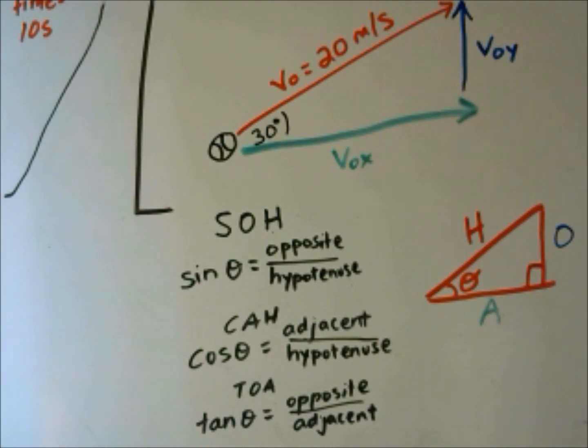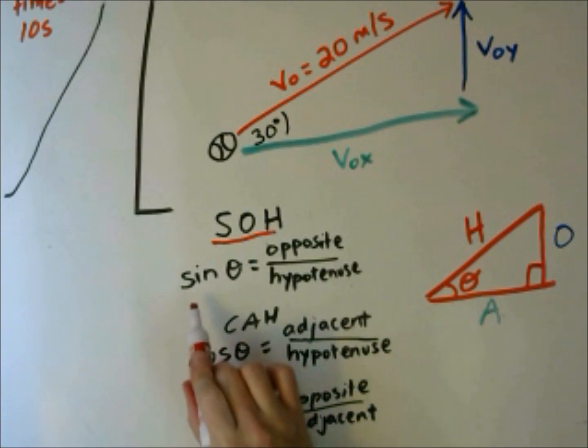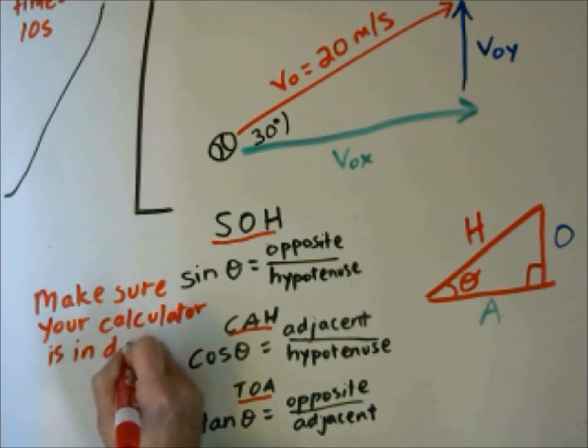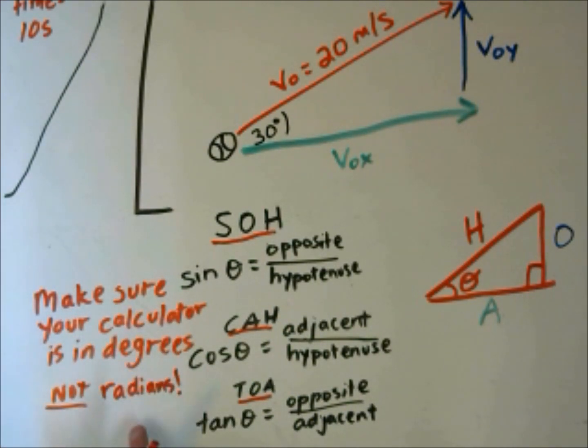In our calculators, we can use the trigonometric functions sine, cosine, and tangent to solve problems finding these parts of a triangle or the angle. And the rules are sine is opposite over hypotenuse. So the sine of the angle is the opposite over the hypotenuse. Cosine is the adjacent over the hypotenuse. And tangent of theta is the opposite over the adjacent. Make sure your calculator is in degrees, not in radians. If you have it in radians, you'll get the wrong numbers. So every time you do trigonometry for physics, make sure you've switched it into degrees. We won't be using radians in this class.